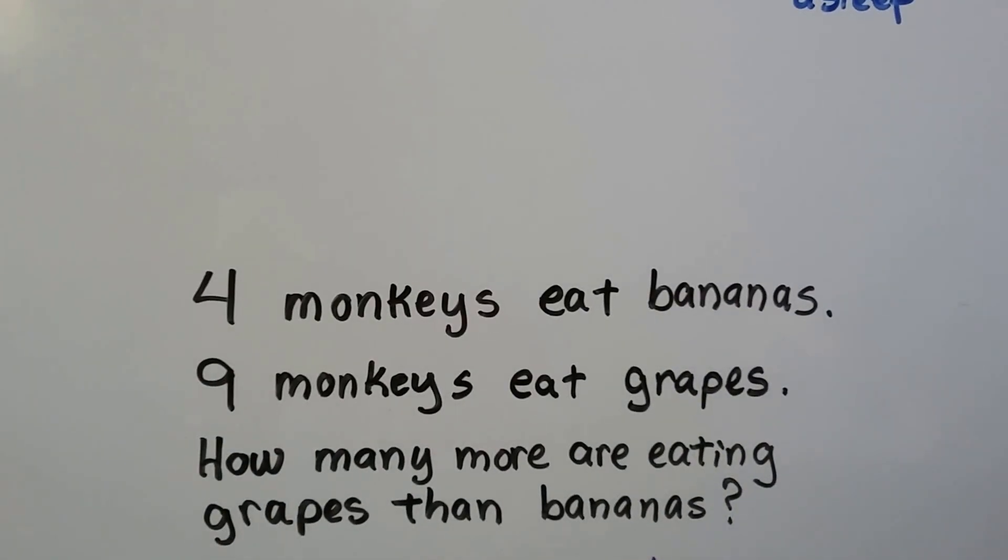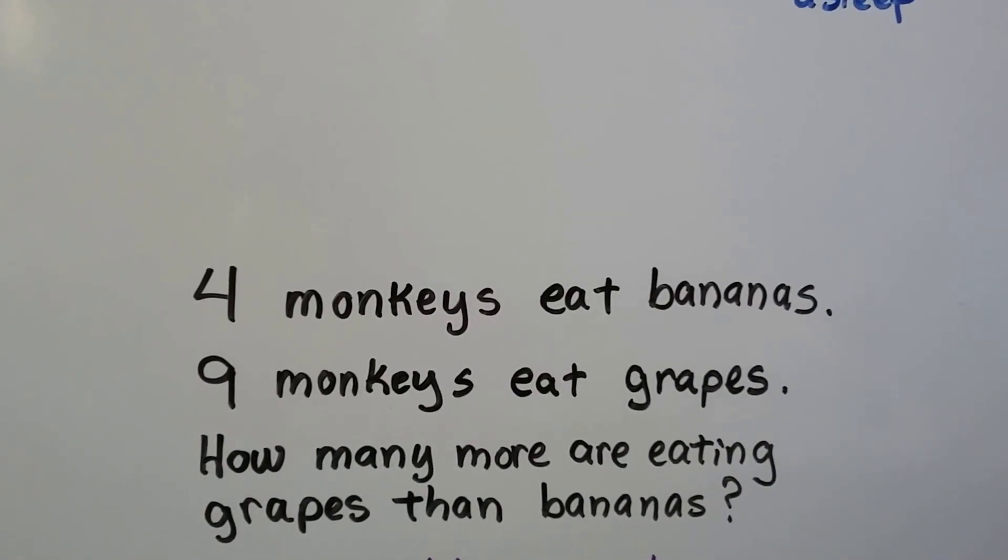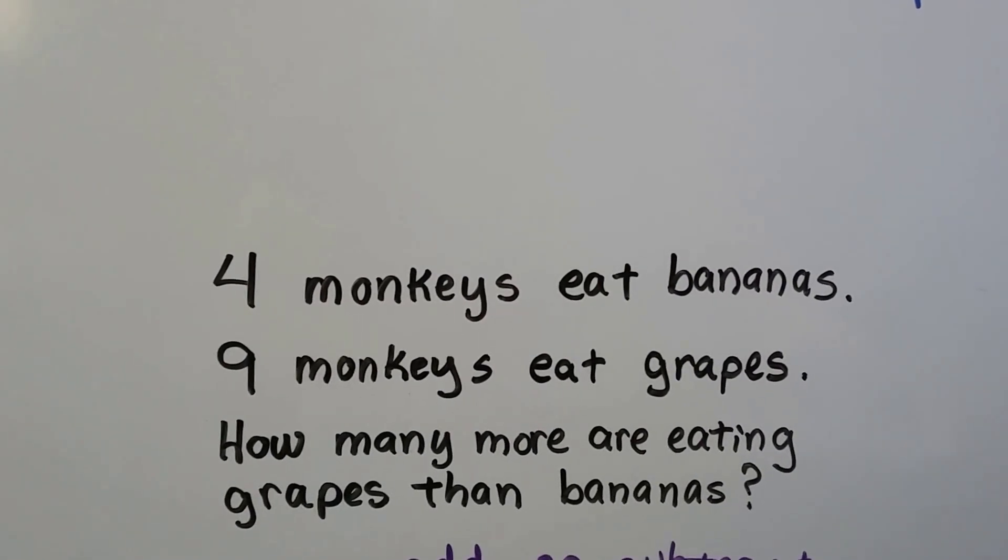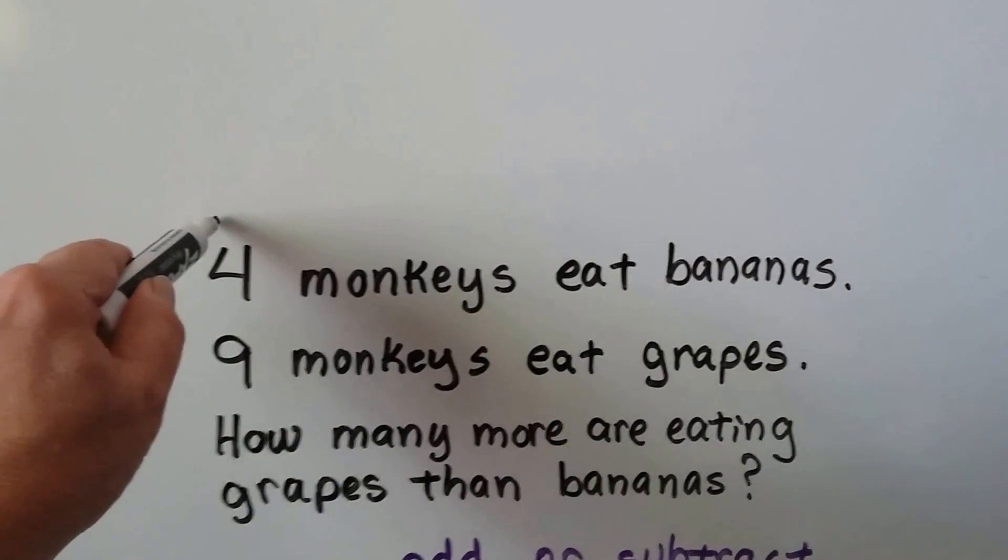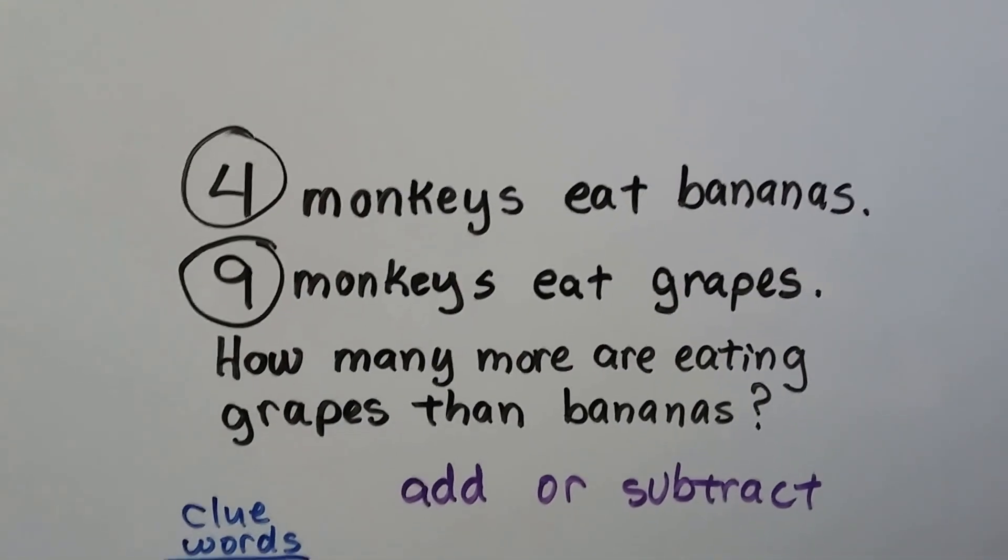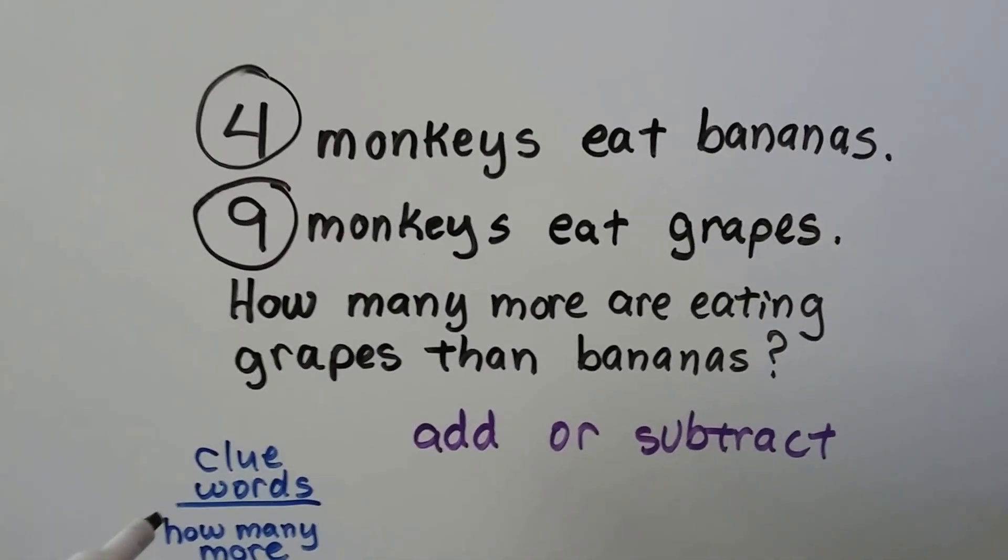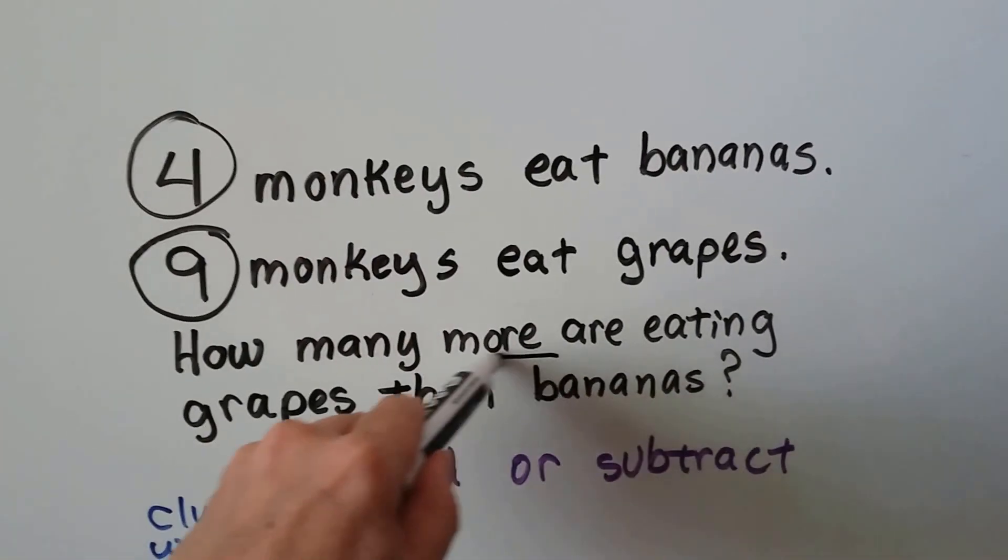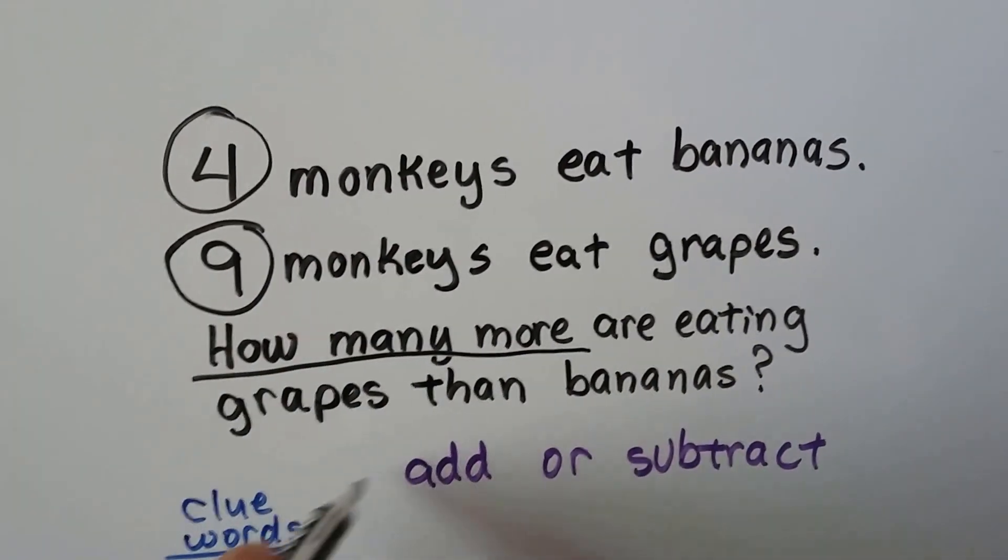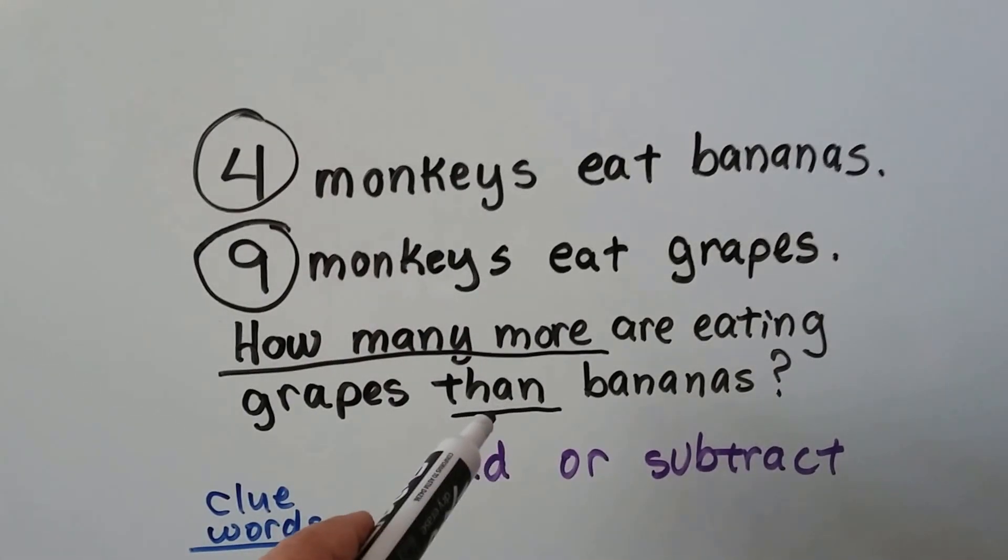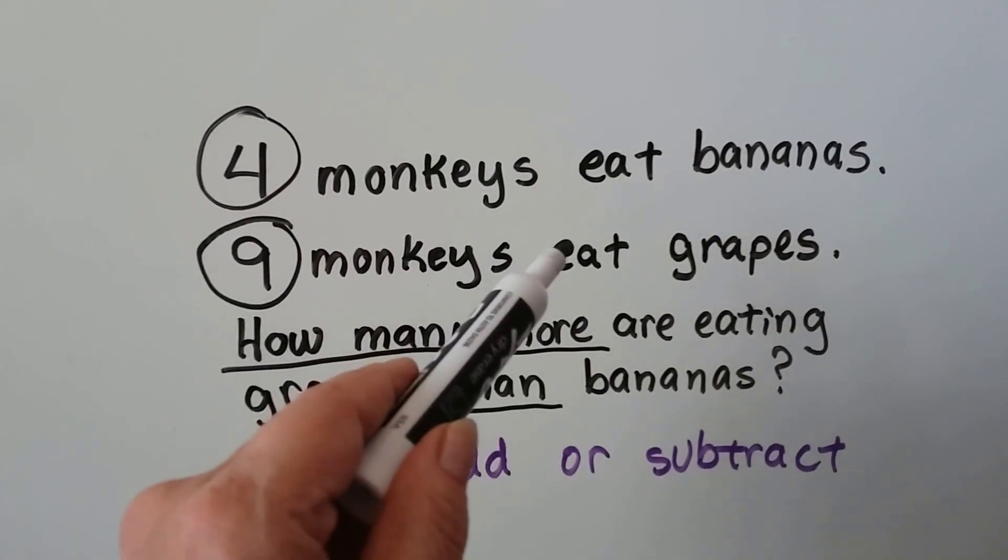Let's try this one. Four monkeys eat bananas. Nine monkeys eat grapes. How many more are eating grapes than bananas? Well, we circle important numbers. Look for our clue words. Our clue words are how many more and than. It says how many more are eating grapes than bananas? So we need to find the difference between grapes and bananas.